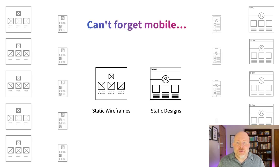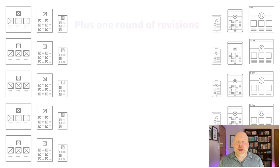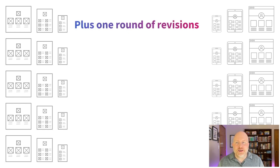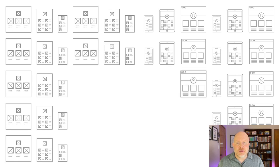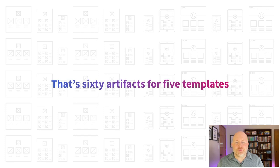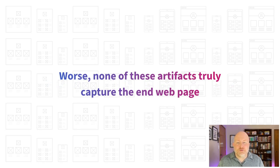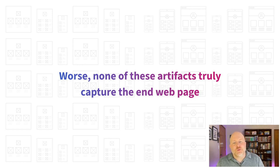We can't forget about mobile, so let's add those wireframes and designs in. And we probably need to worry about tablet as well. There's no way we're going to publish a website without at least one round of revisions. By the time we get here, we've got 60 total artifacts for just those five templates. And of course, most organizations have more than five templates. How often is there just one round of revisions? So we've created literally dozens of artifacts, and not a single one of them accurately reflects what the experience will be like in responsive design.